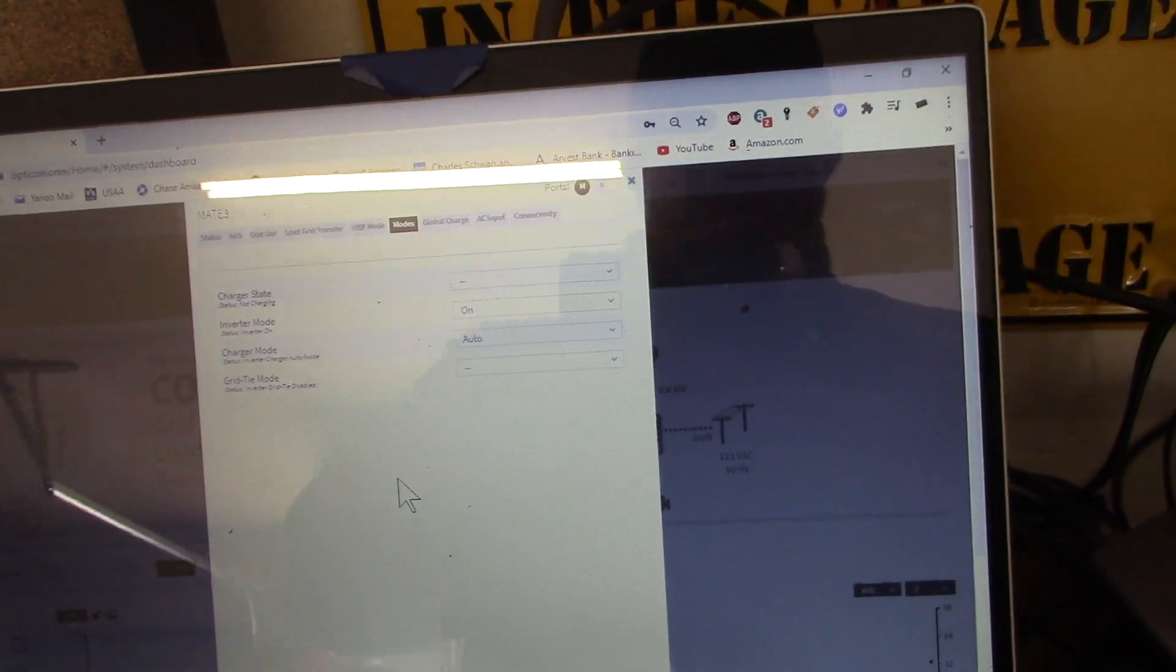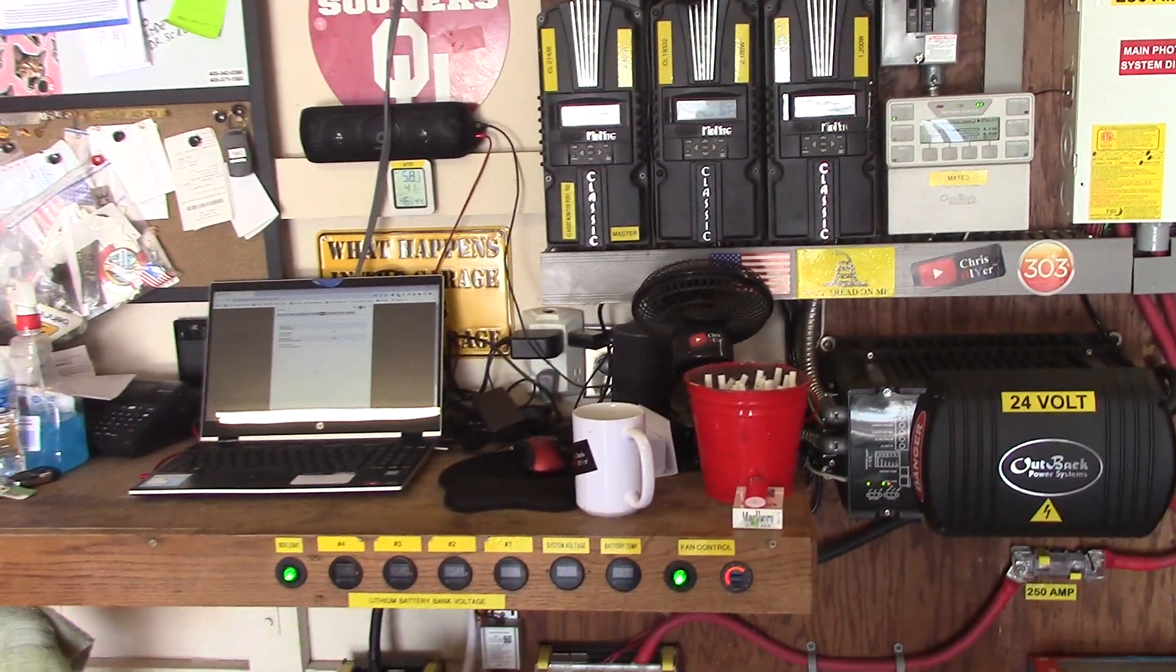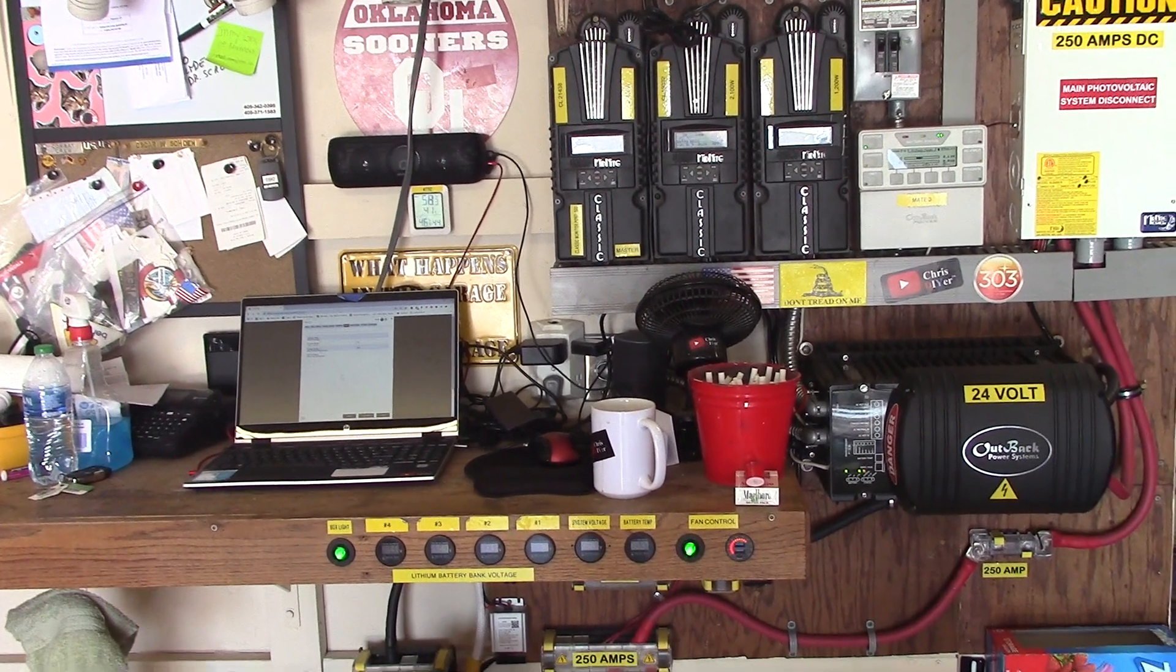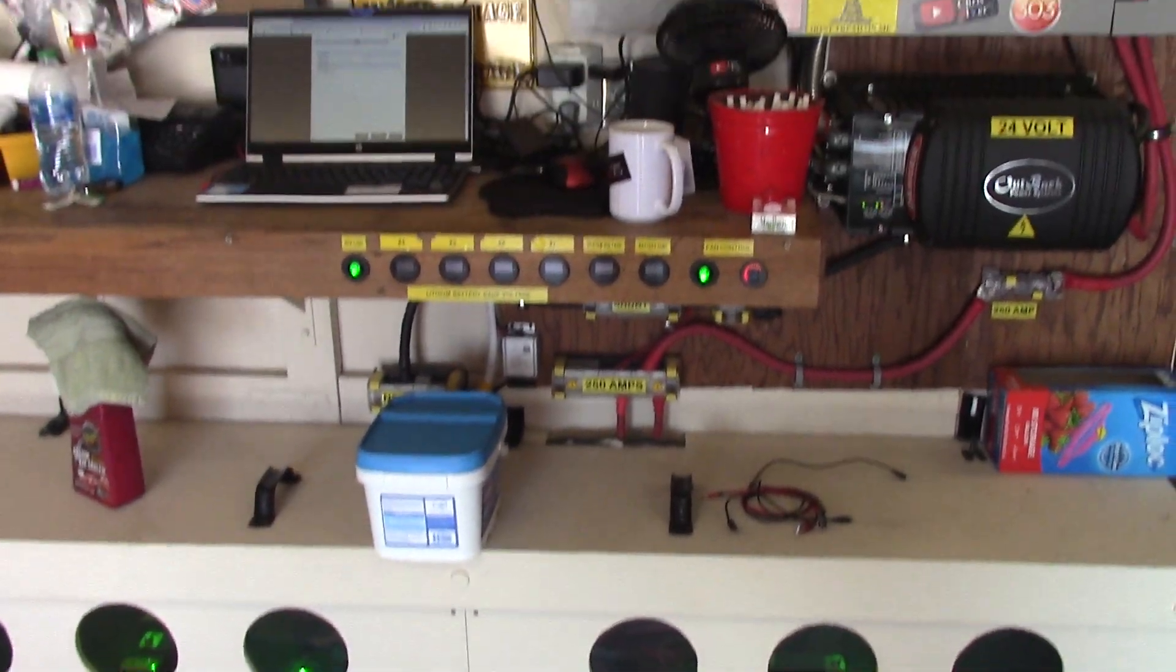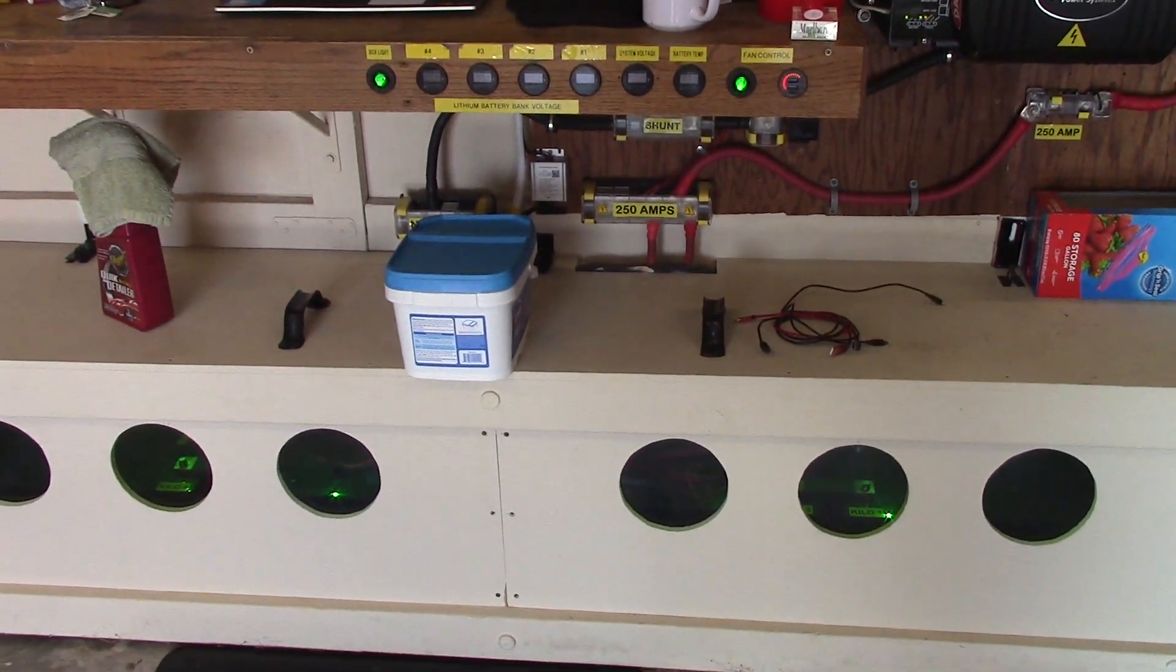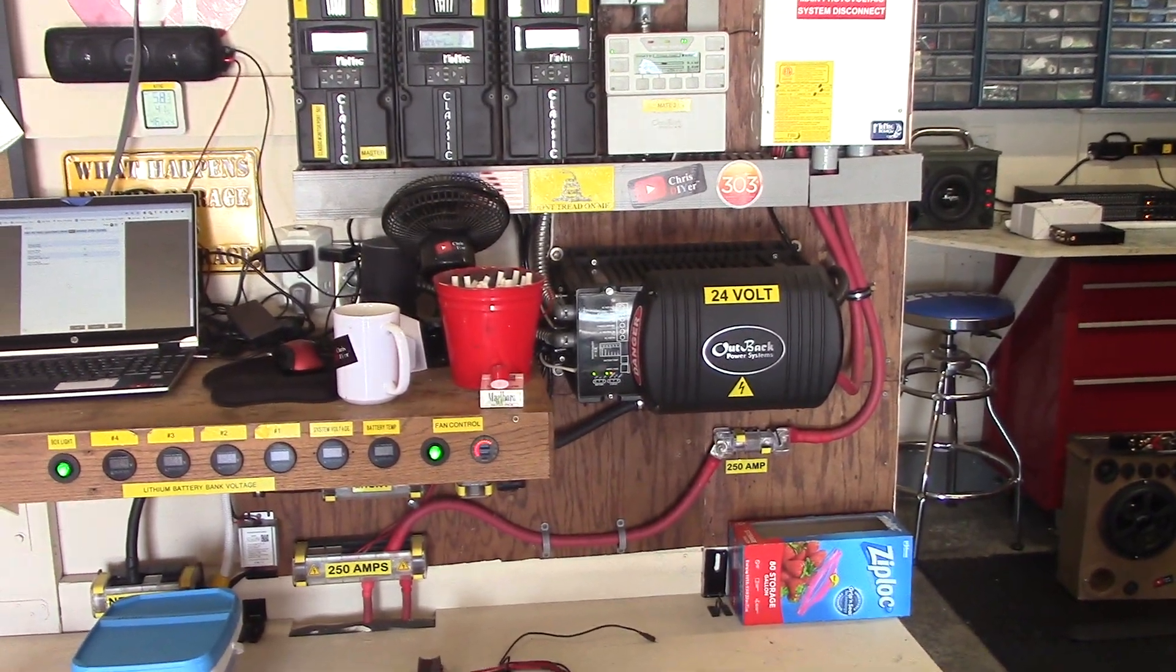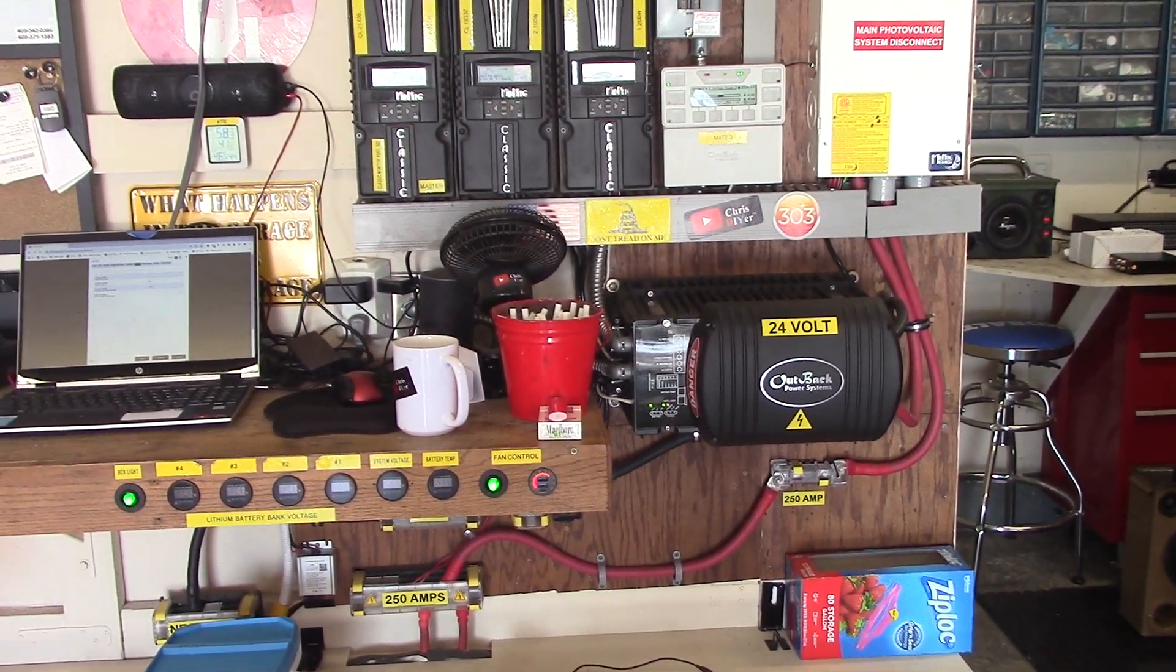So now essentially this thing is going to be autonomous. If I've got sun to charge, it'll charge and invert all day to the batteries. If I don't have sun, keep everything connected. And then when the battery voltage goes down to 26 volts, the charger right here will kick on. It'll go up to 28 and give a full charge, and then invert.